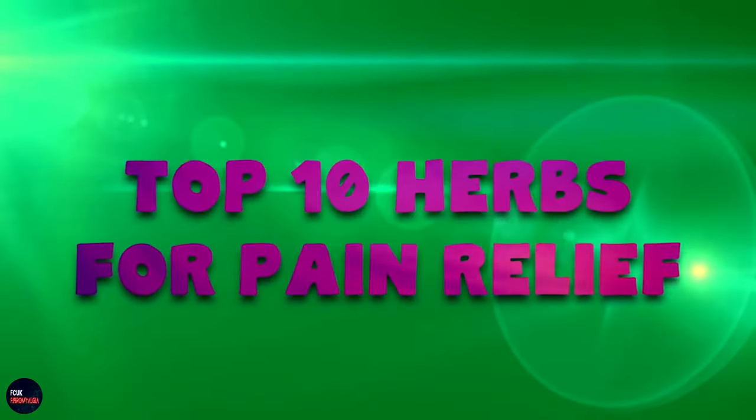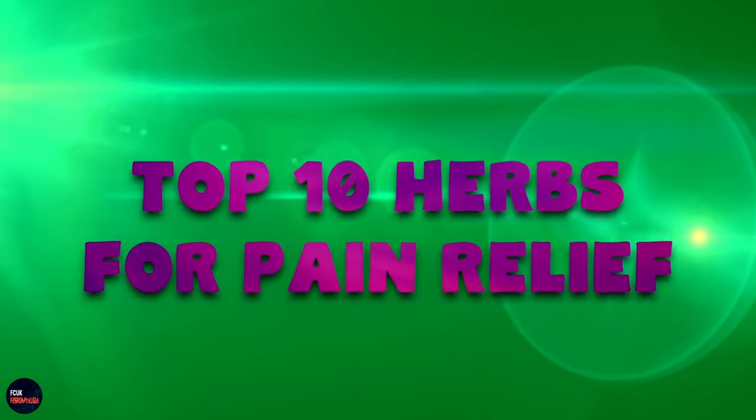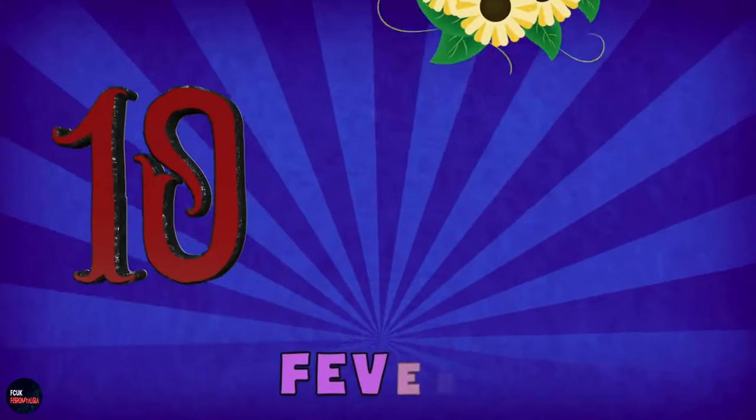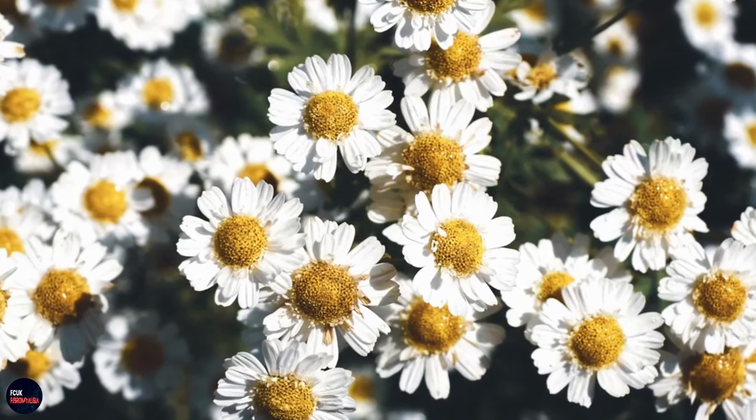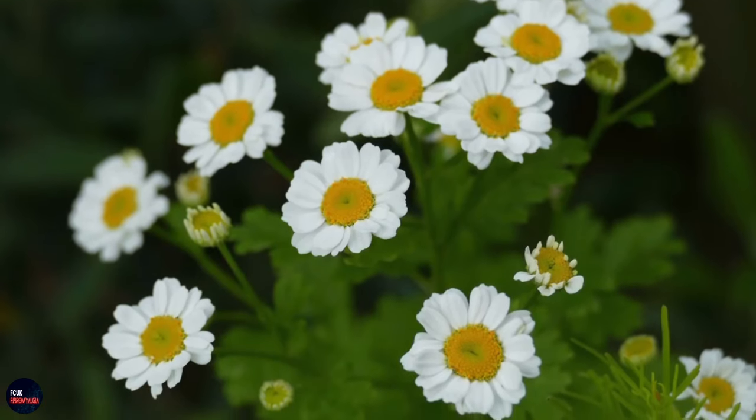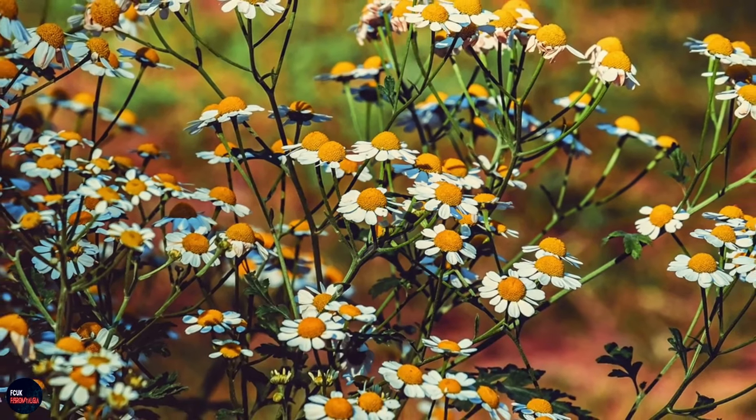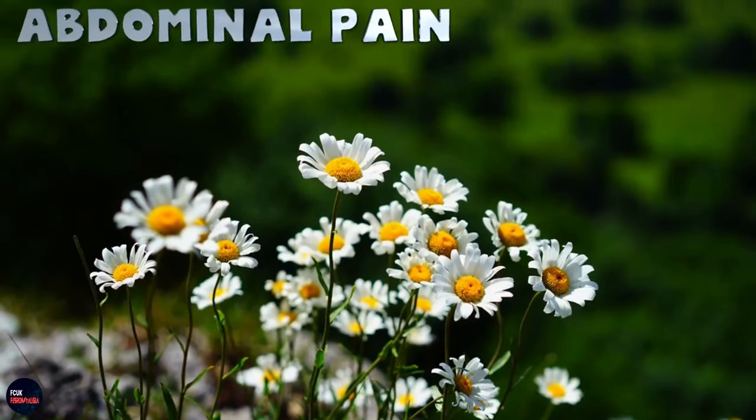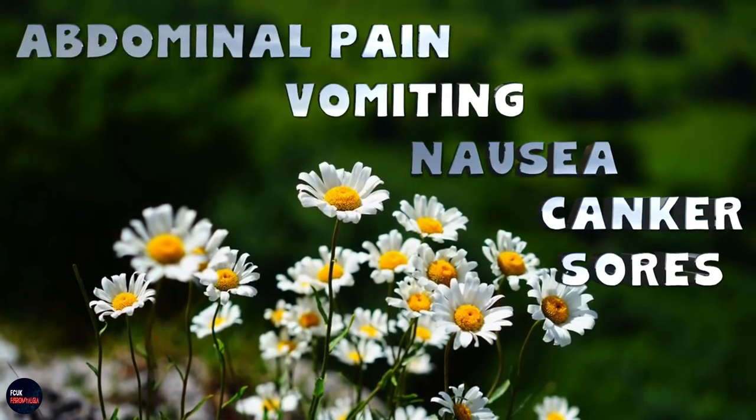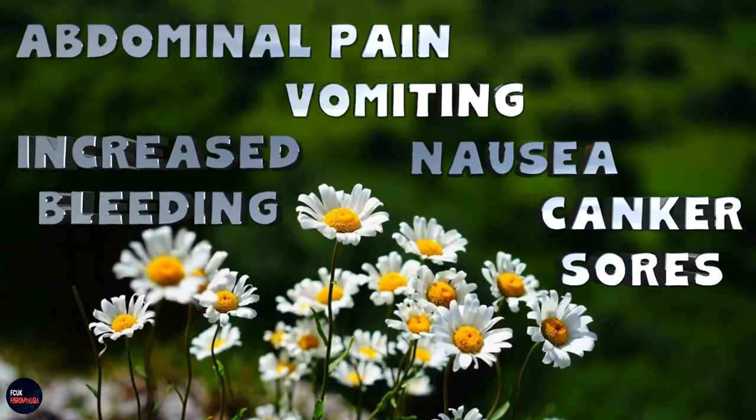And now the top 10 herbs for pain relief. Number 10, feverfew. Feverfew has been used for centuries for headaches, stomach aches, and toothaches, and more recently it's even been used for rheumatoid arthritis and migraines. The American Migraine Foundation says that feverfew is likely helpful at preventing migraines, but so far there are mixed results on its effectiveness. While feverfew isn't linked to many side effects, it has occasionally been known to cause abdominal pain, nausea, vomiting, canker sores, and increased risk of bleeding.